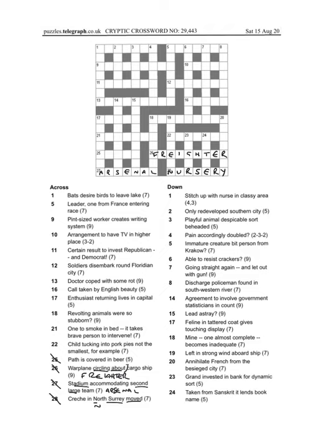And then 25 across, is, so you just write is, covered in beer, so a word again going around, covered, and the beer is ale, and that gives us aisle, which is a path.